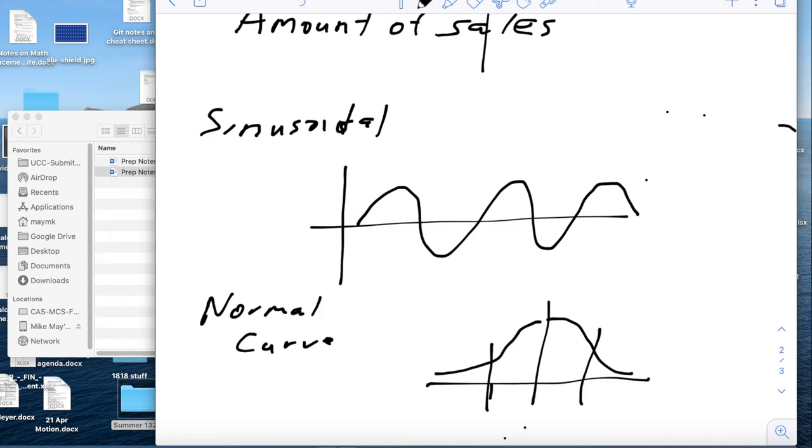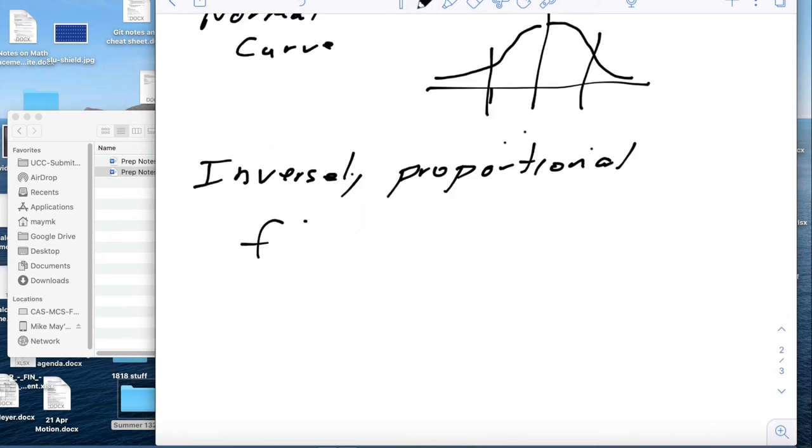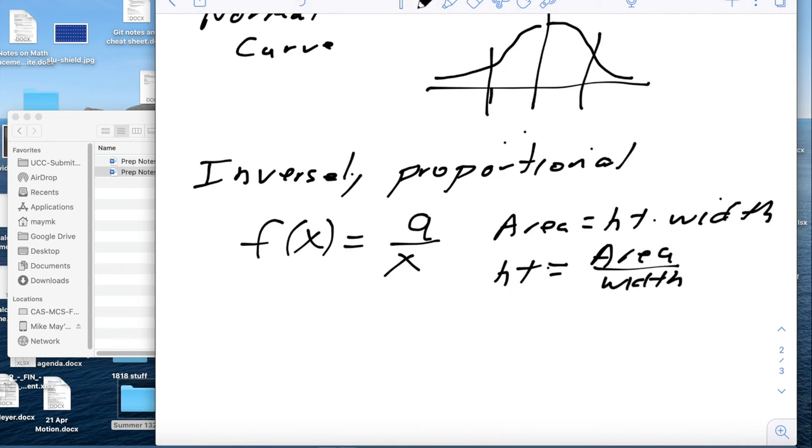Two other functions that will show up. Inversely proportional. F of x equals a over x. And the easiest thing to think of for this is area equals height times width. And so if I know how much material I want to put into a box, the height of the box and the width of the box are inversely proportional. So height will be area over width. And so we'll look at some functions where we're going to use inversely proportional functions. That means it's a constant over the variable.